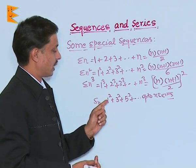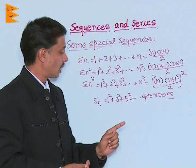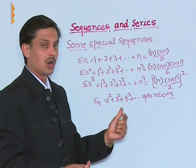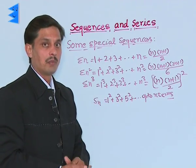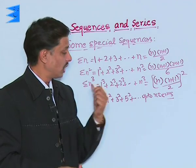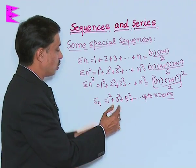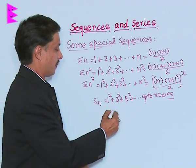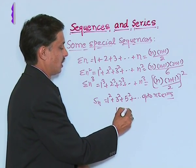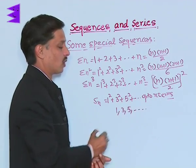First, this is the sum of squares of odd numbers. First n odd natural numbers. So, if there is no square, then the progression is 1, 3, 5 dot dot dot.